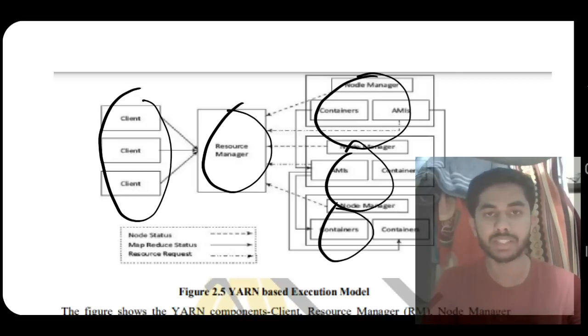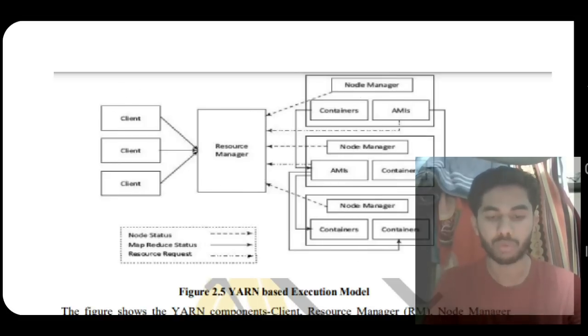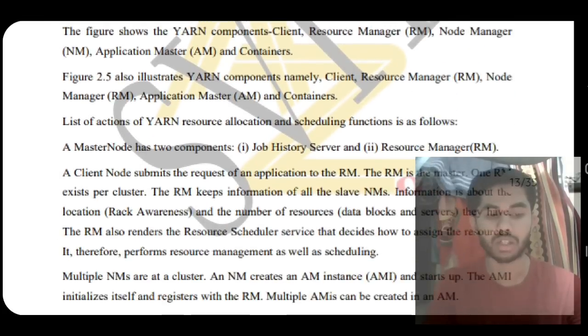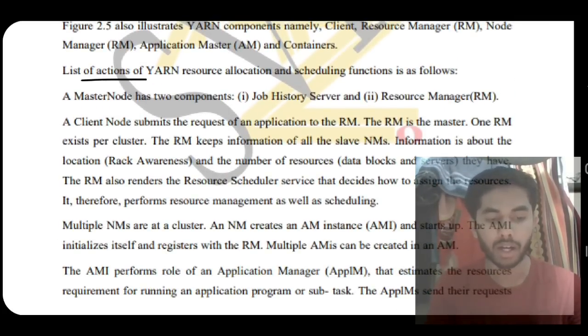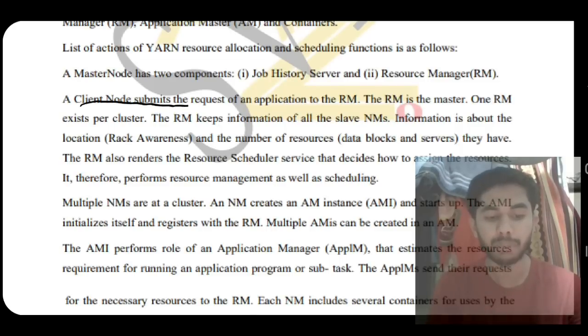The execution is beautifully explained in this diagram. The client sends requests to the resource manager and gets the status of all node managers, application managers, and containers. The list of actions for YARN resource allocation and scheduling functions: Master node has two components, Job History Server and Resource Manager. First, a client node submits the request of an application to the resource manager.